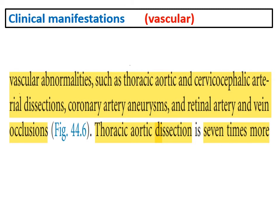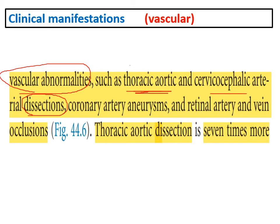Other vascular abnormalities in ADPKD include thoracic aortic dissections, cervical cephalic artery dissections — occurring seven times more than in the general population — coronary artery aneurysms, and retinal artery and vein occlusions.